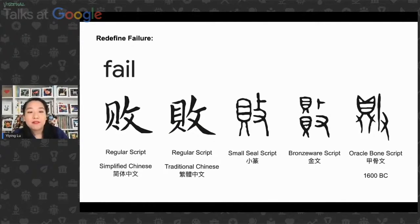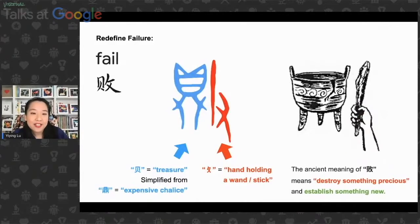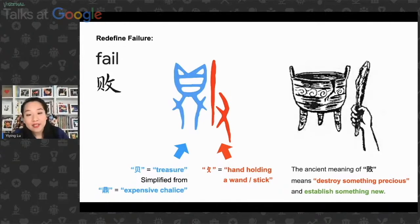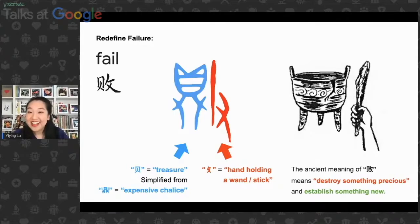If you look at the word from simplified Chinese, traditional Chinese, and trace it back to the oracle bone script — because Chinese is a very visual language — you can see the Chinese character for 'fail' consists of two parts. The left part means 'treasure,' which is 'bèi,' originated from the word 'dǐng,' meaning an expensive chalice. On the right, it's a hand holding a wand or stick. So the Chinese meaning of failure literally means 'destroy something precious and establish something new.' It's quite a neutral word — there's nothing bad or good about fail. It's just: destroy something that doesn't serve the purpose, and build something new.